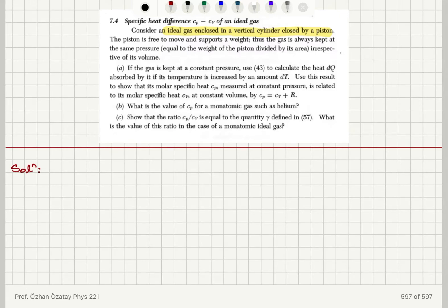The pressure equals the weight of the piston divided by its area irrespective of its volume. If the gas is kept at a constant pressure, calculate the heat d bar q absorbed by it if its temperature is increased by an amount dt.